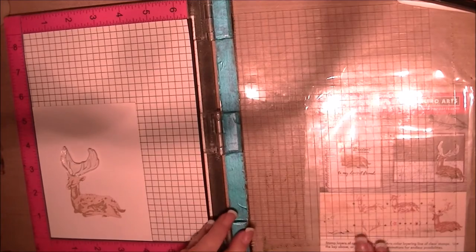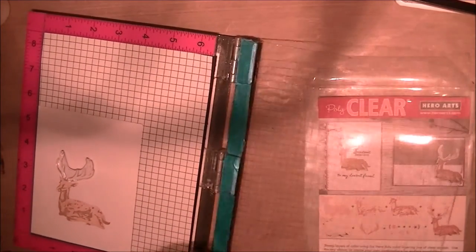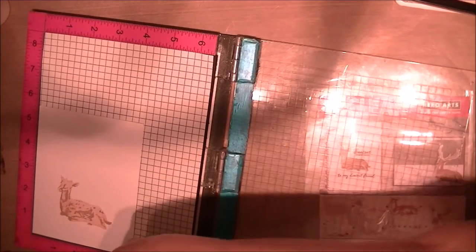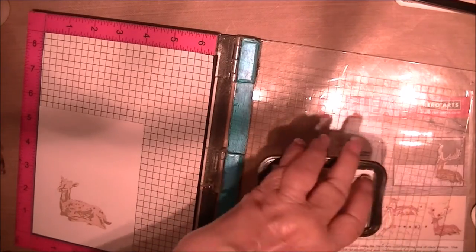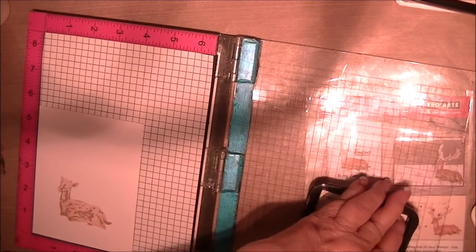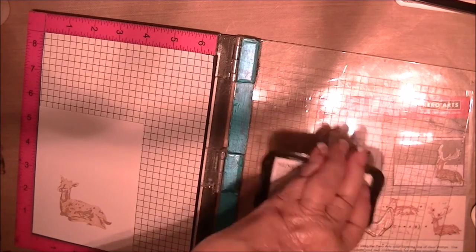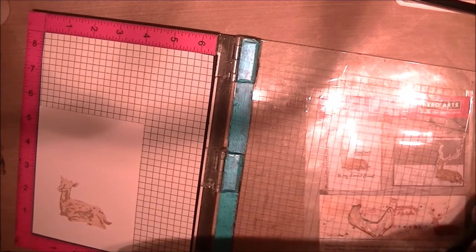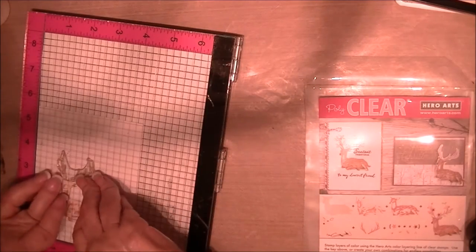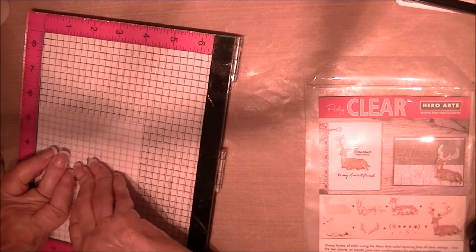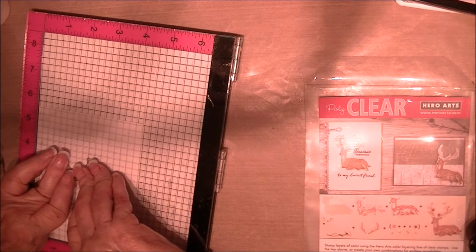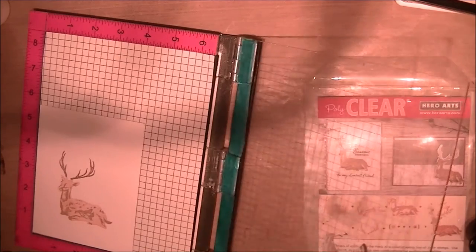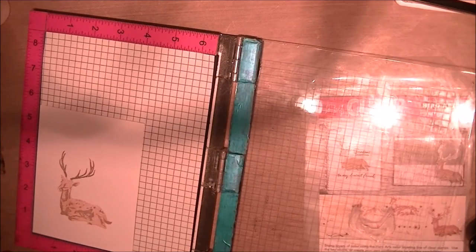So I'm going to be using the same ink we used for step two. I'm off just a little bit here on the antlers. Doesn't quite reach the head.